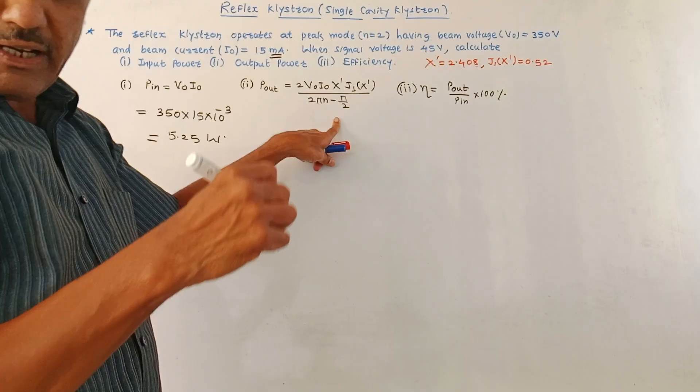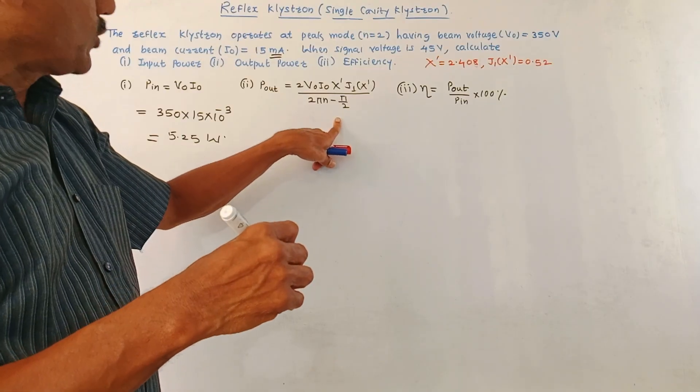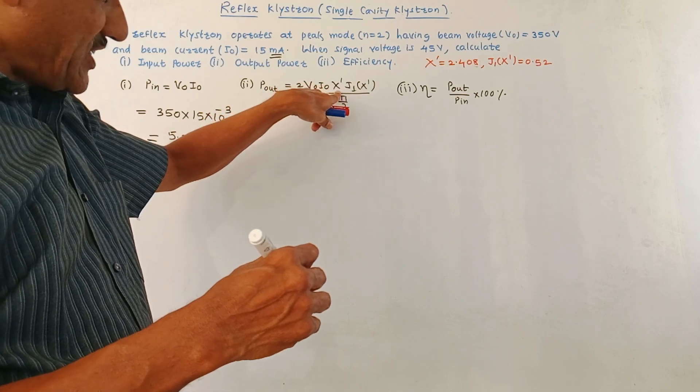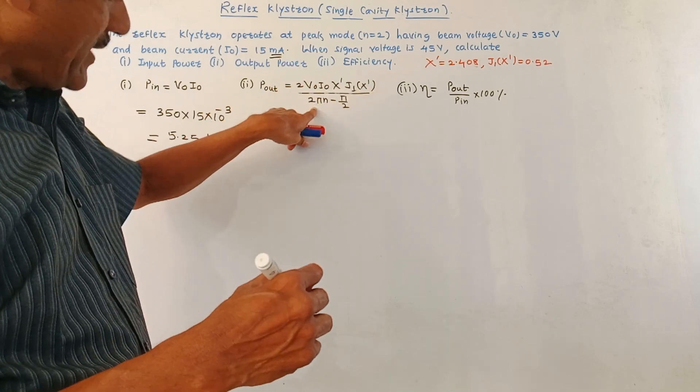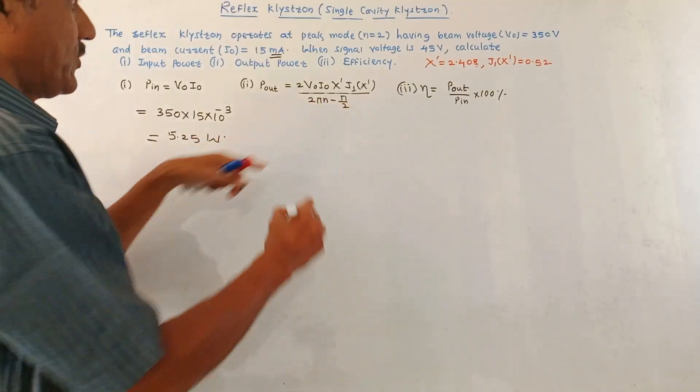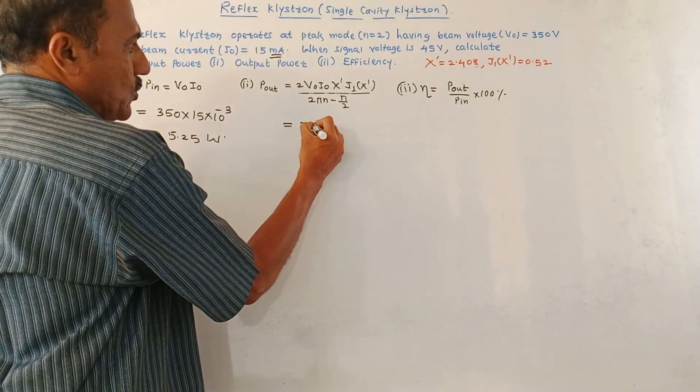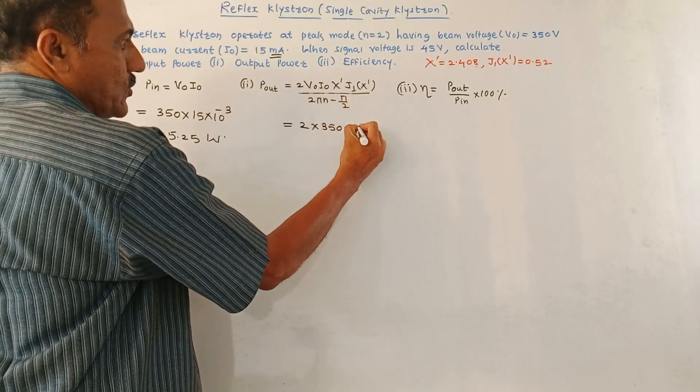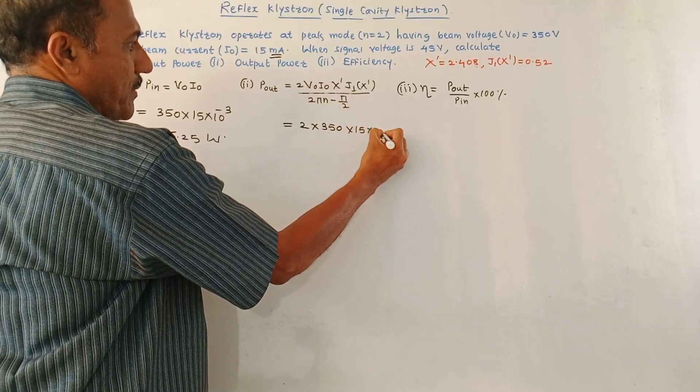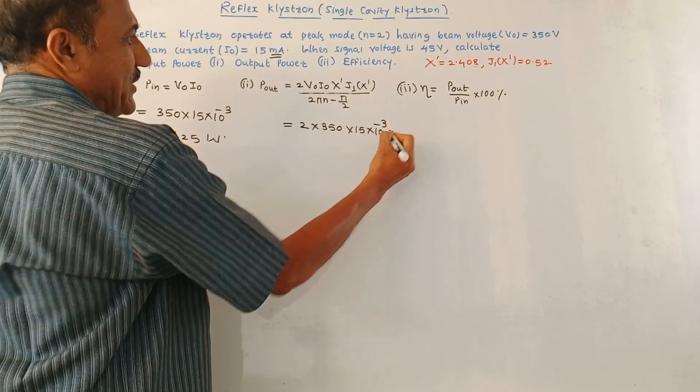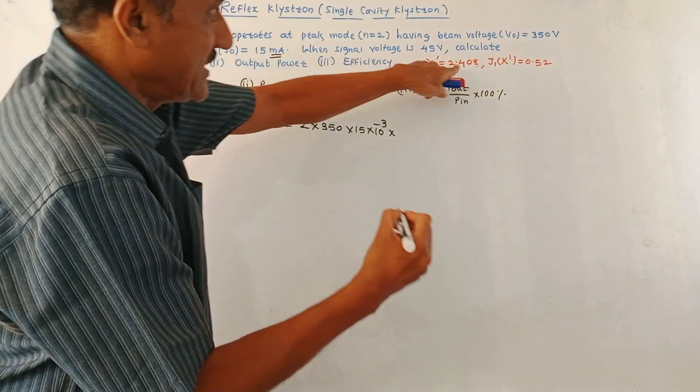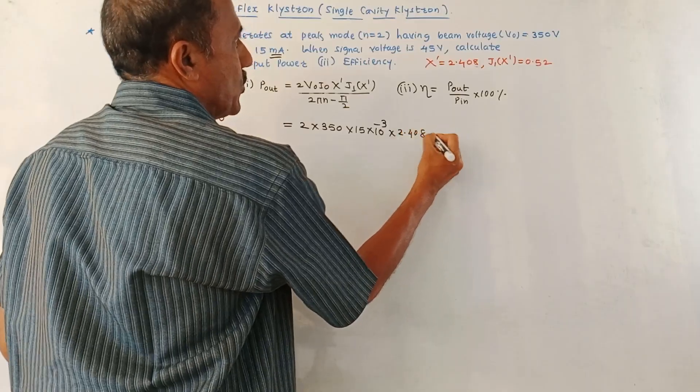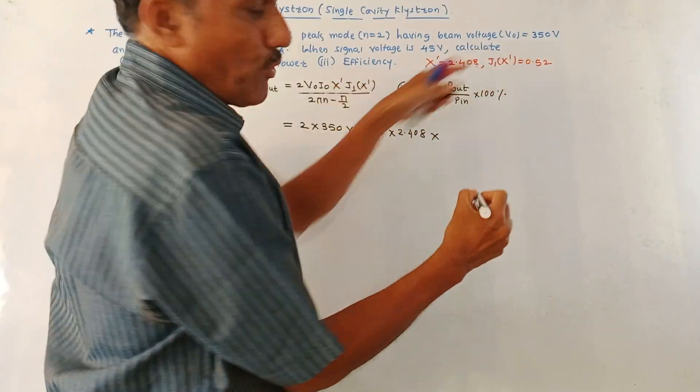This is the formula to calculate the corresponding output power. The equation is 2V0 I0 times x dash j1 of x dash divided by 2 pi n minus pi by 2. Put the values: 2 into V0 which is 350 into I0, which is 15 milliampere, so 15 into 10 raised to minus 3, into x dash which is 2.408 into j1 of x dash that is 0.52.